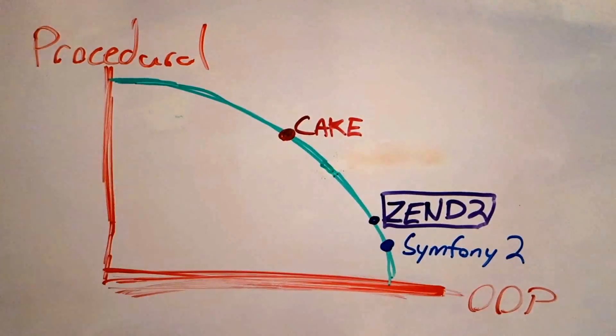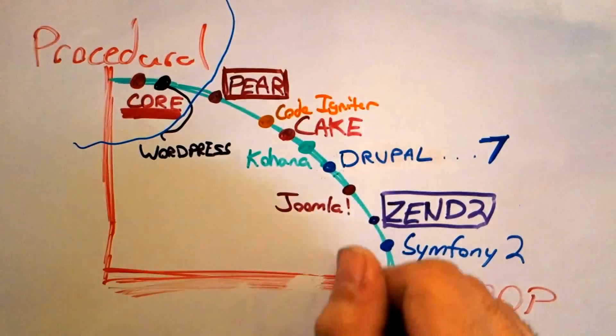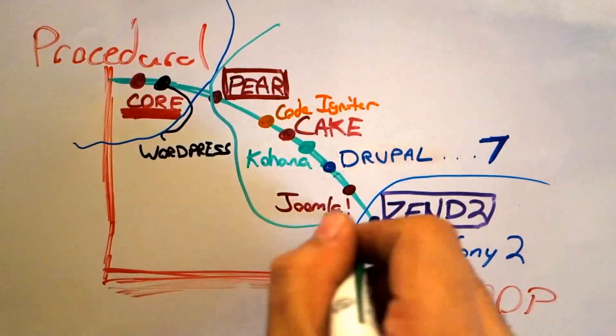As you can see, there are a few that are mostly procedural and a few that are mostly object oriented. But the majority of applications fall somewhere in the middle.